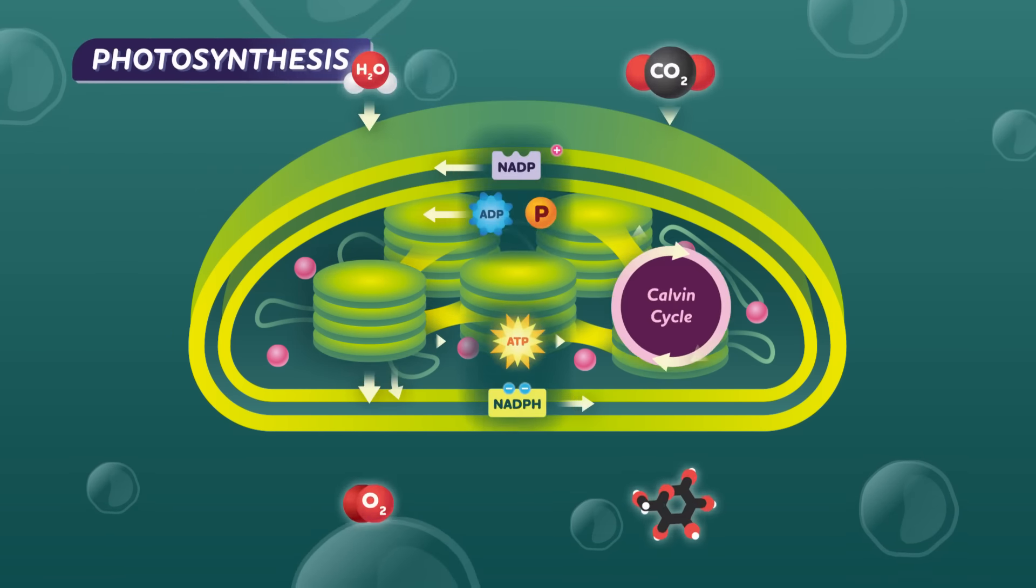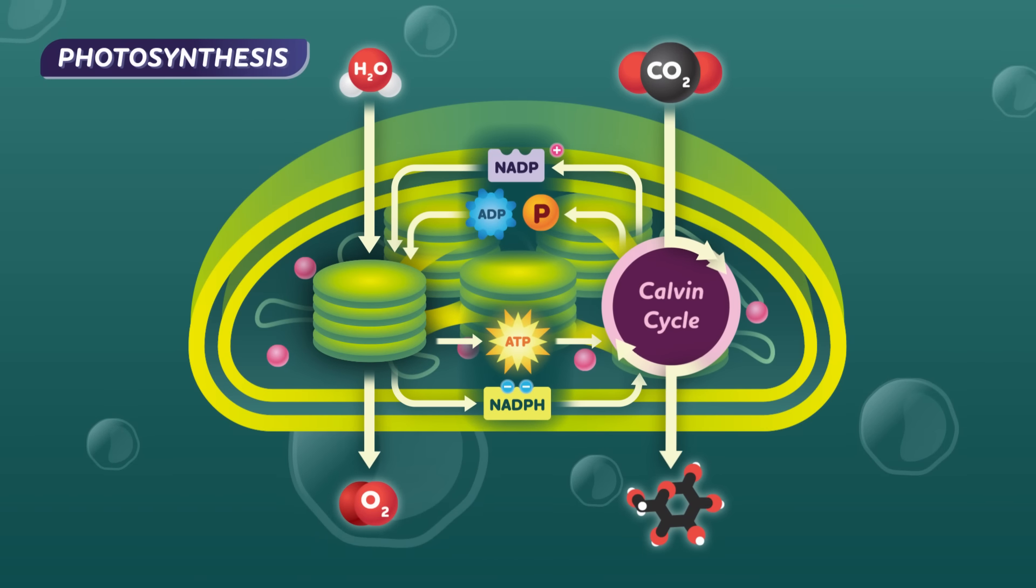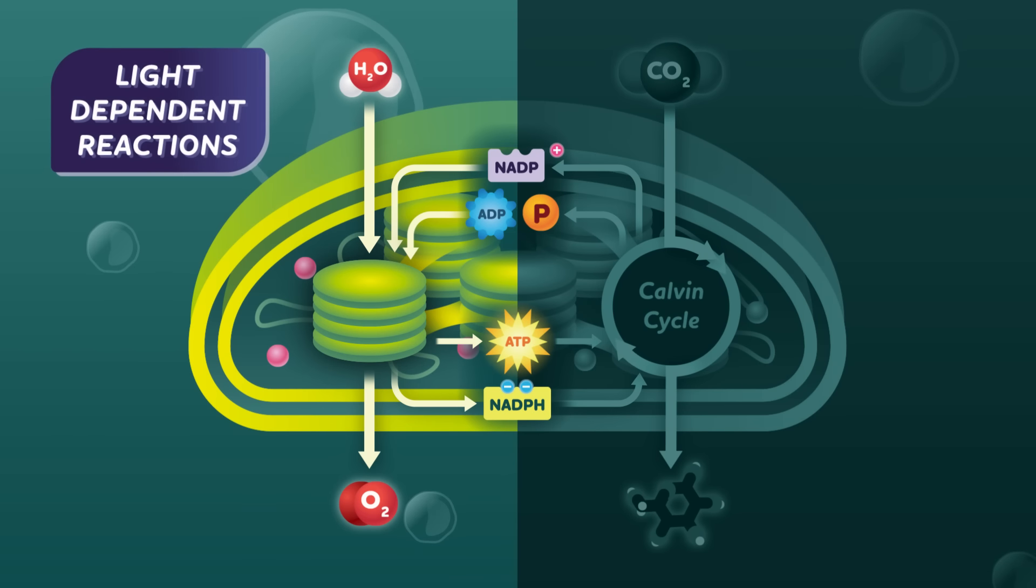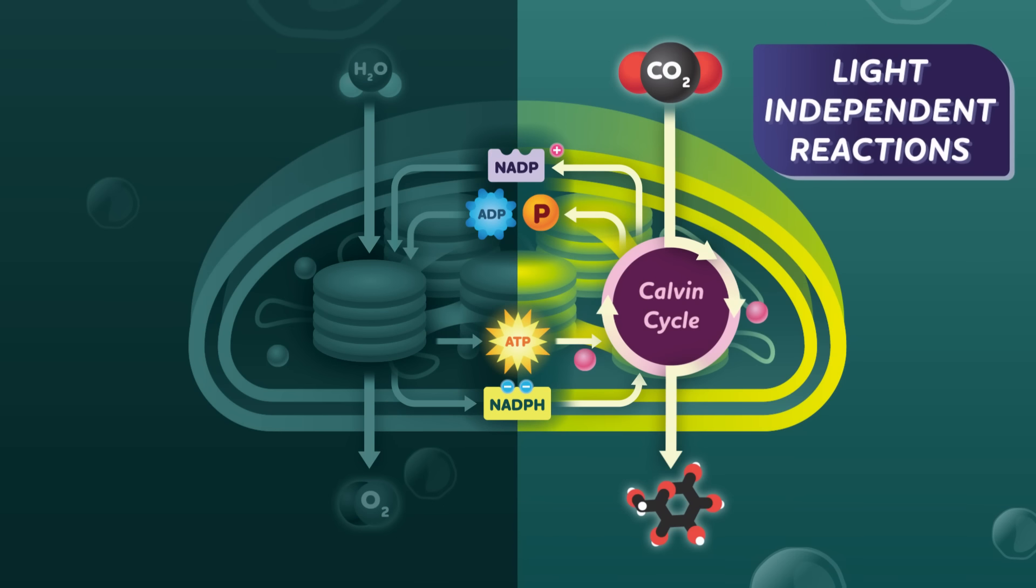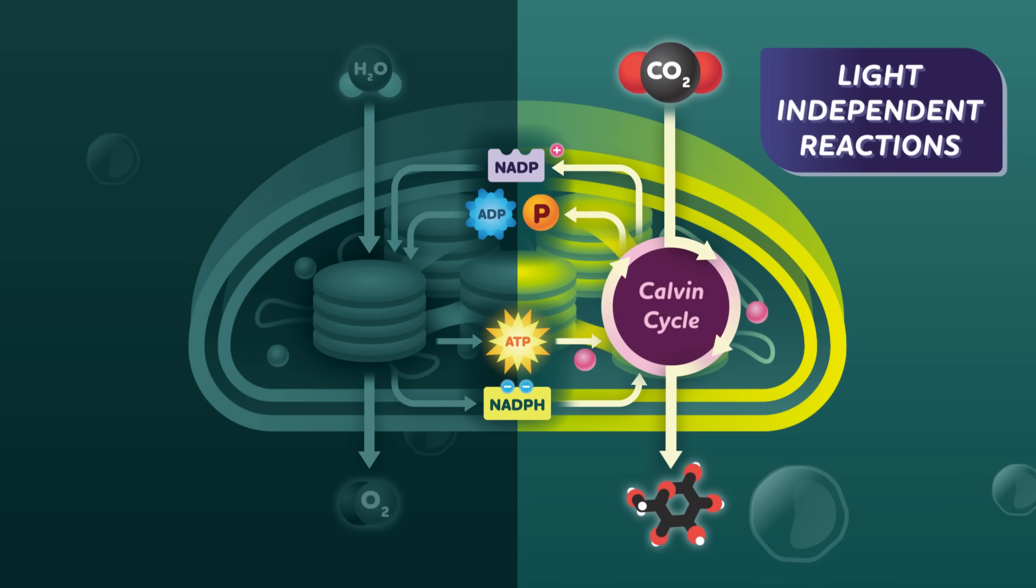Ultimately, photosynthesis is an elaborate process at the intersection of biology, chemistry, and physics. But at its heart, photosynthesis is like a play that comes to you in two acts. The light-dependent reactions, and the light-independent reactions, or the Calvin cycle.